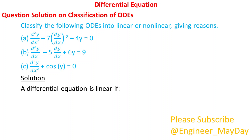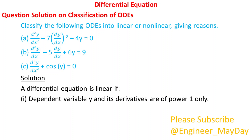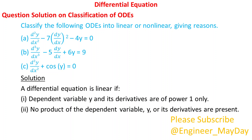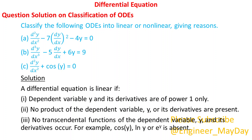A differential equation is linear if: 1. The dependent variable y and its derivatives are of power 1 only. 2. No product of the dependent variable y or its derivatives are present. 3. No transcendental functions of the dependent variable y and its derivatives occur — for example, cos y, ln y, or exponential y is absent.